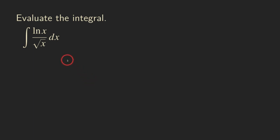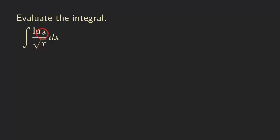Hello, everyone. Let's look at this integral. We have an integral that we can evaluate using integration by parts, because we can see that it's a product. We have ln of x — even though that looks like a quotient, we can write it as ln(x) times 1 over the square root of x. So we will be able to use integration by parts to find the antiderivative of this function.